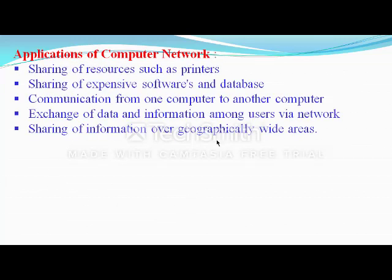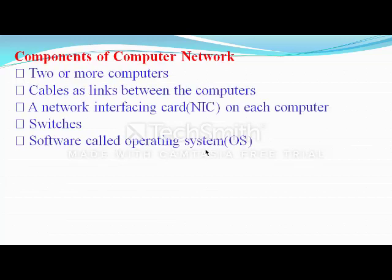Applications of computer networks: sharing of resources and materials, sharing of expensive software and databases, communication from one computer to another, exchange of data and information among users, and serial transfer of information geographically. Components of a computer network include: two or more computers, cables and links between computers, network interface cards, switches, and an operating system.